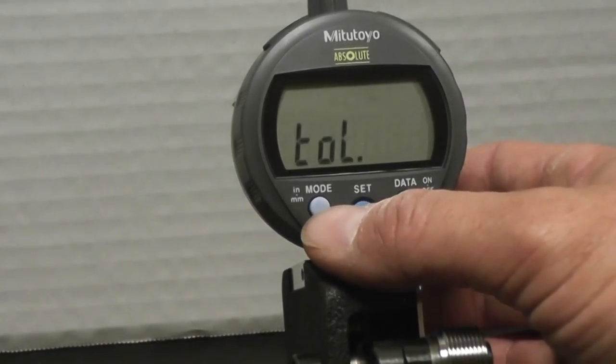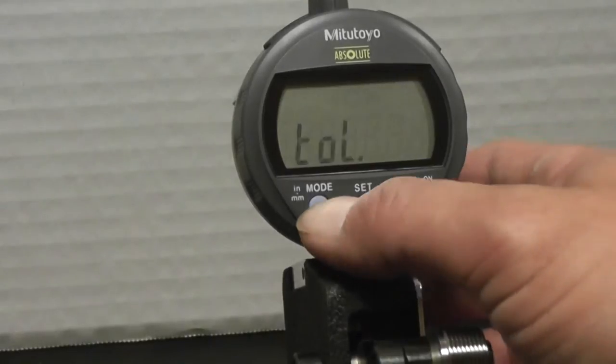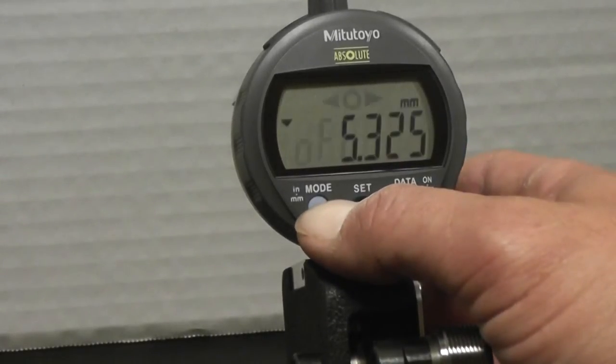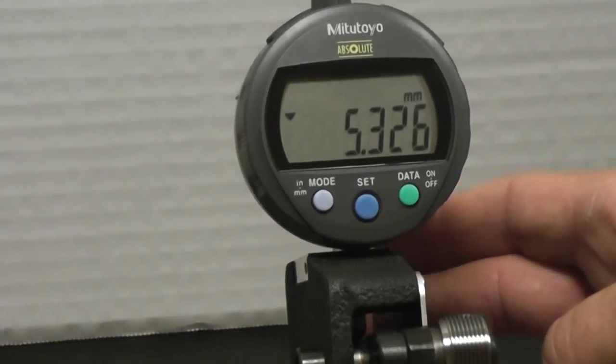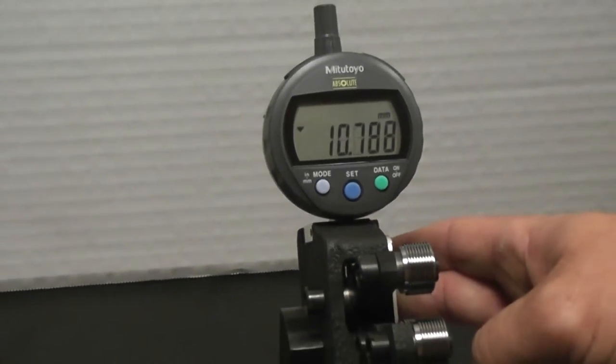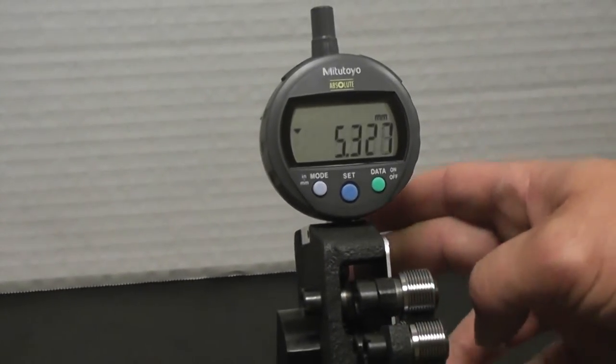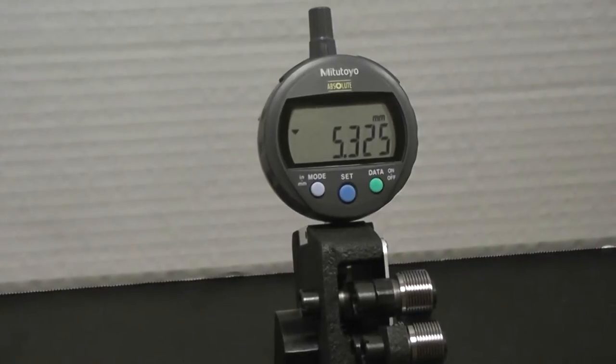To give us the down arrow, this is either not reverse read or reverse read. When we see that down arrow, that means reverse read, you want to set it there. At that point, to exit the Mode, you can either power it off, or just hold Mode down. Now, when we raise it, the numbers get bigger, and go closer together, the numbers get smaller. So we're good there.